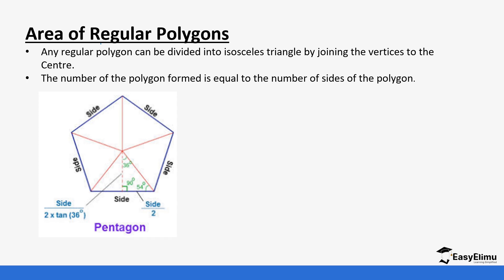Any regular polygon can be divided into isosceles triangles by joining the vertices to the center, as you can see in the image. The number of triangles formed is equal to the number of sides of the polygon. For example, this one has five sides — one, two, three, four, five — so it is referred to as a pentagon.